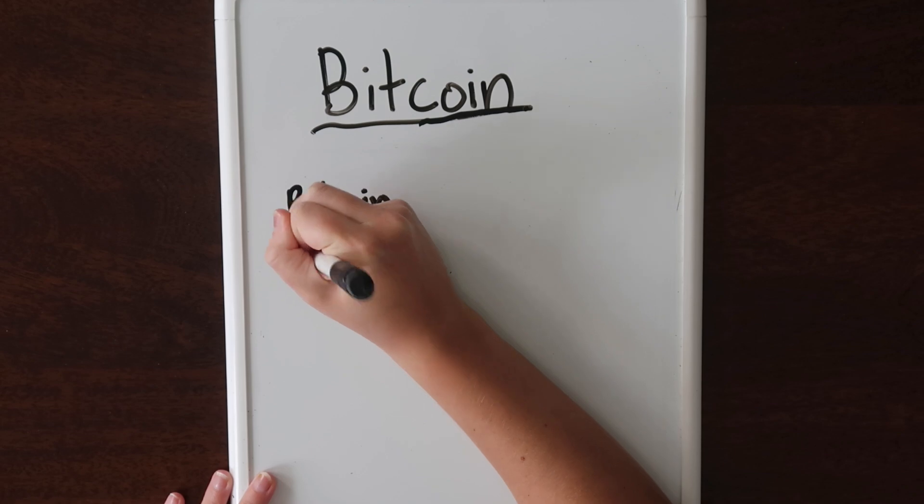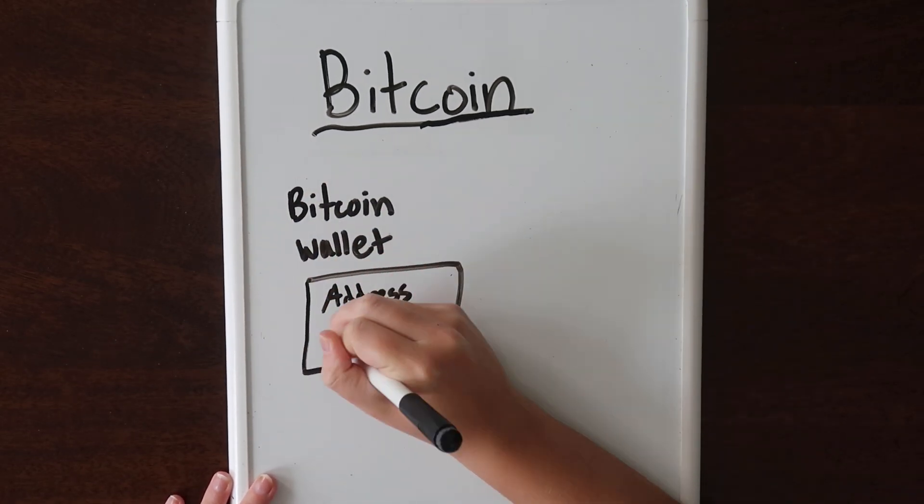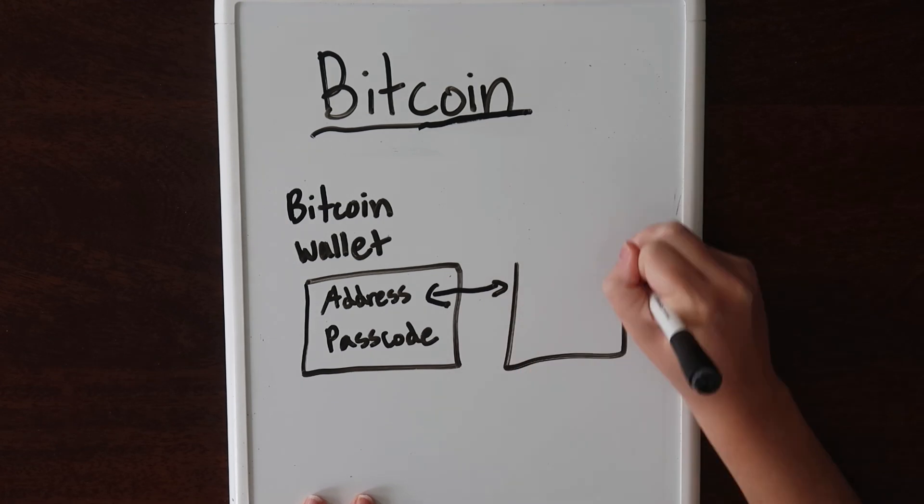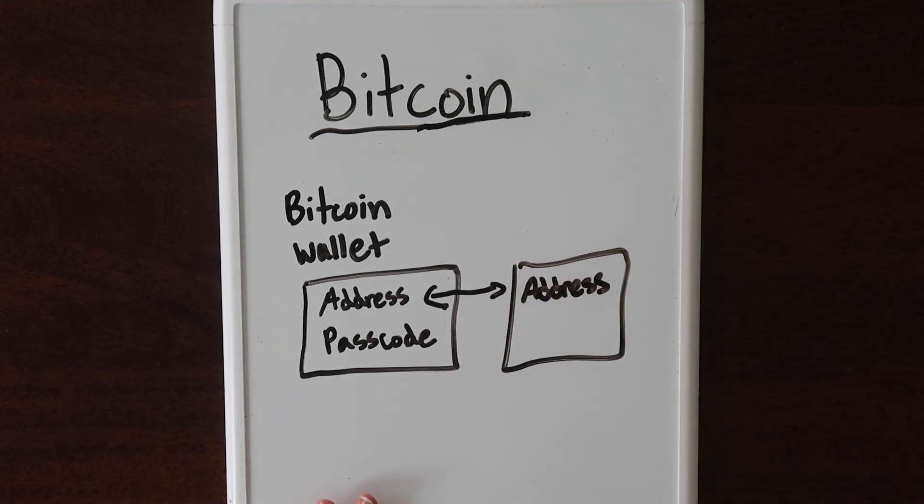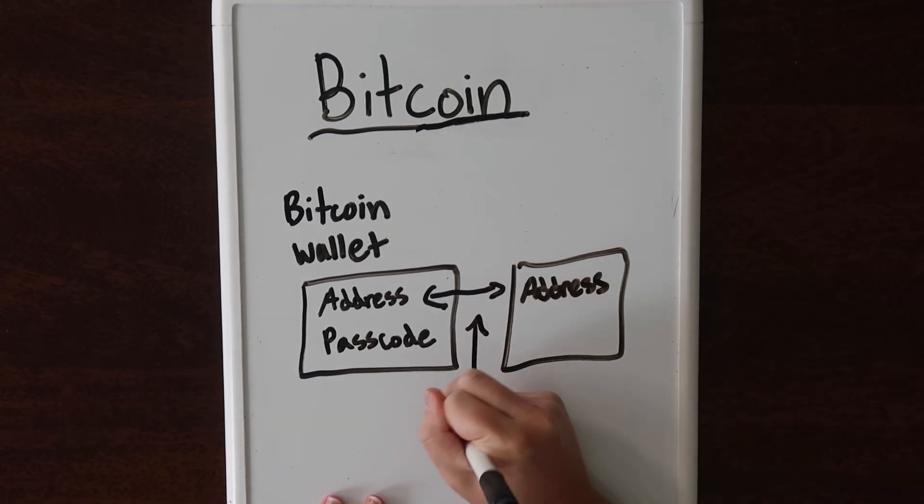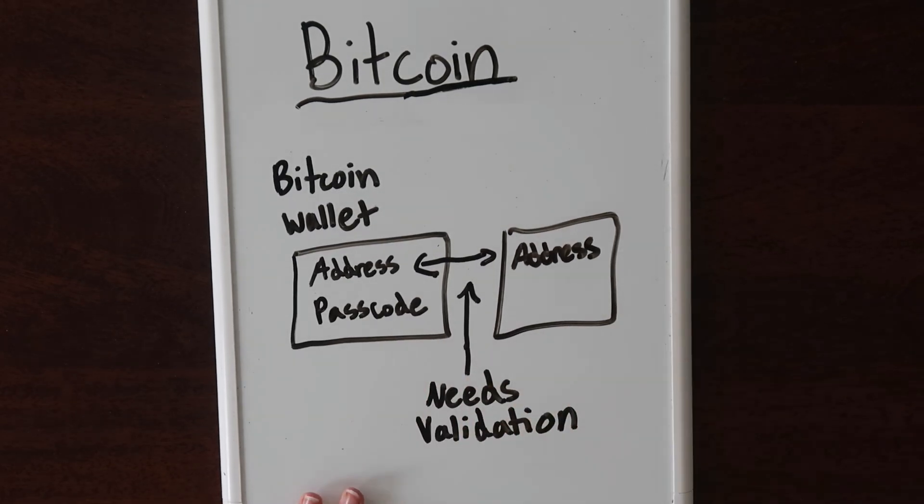In order to send money, you have a Bitcoin wallet with an address and a passcode. When you send money, you send money to another Bitcoin address. Before the transaction goes through, it must be validated.